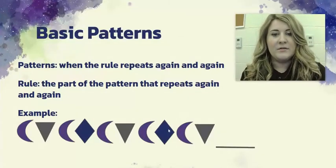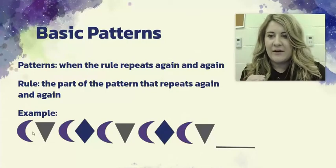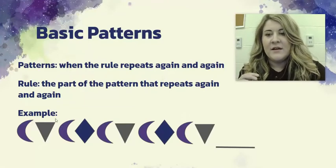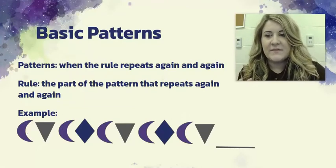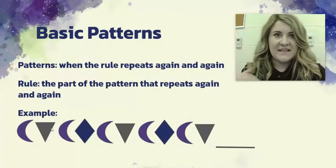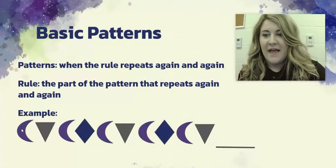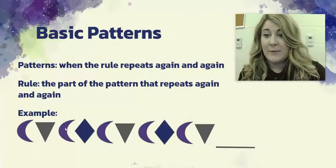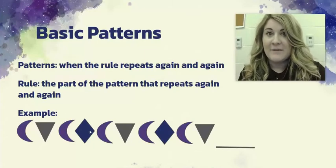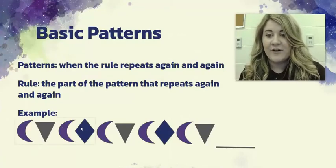Looking at this pattern: moon, triangle, moon, diamond, moon, triangle, moon, diamond. Don't be confused — some of you might say 'moon, triangle' is the pattern, but if you look closely there's another shape that comes later. The purple moon is all A's, the triangle is B, and the purple diamond is C. So this is an ABAC pattern — our rule here is these four shapes.